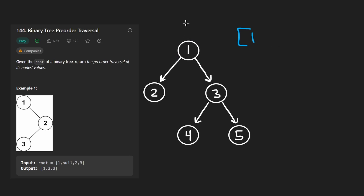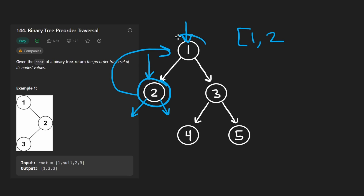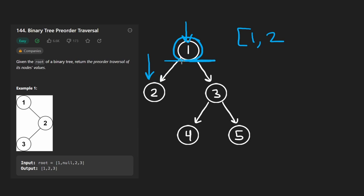So our output would look like this. We visited the root, then we'd go left and visit node two, adding two to the output array. We'd try to go left at that point, but we can't — there's nothing there. Then we'd pop back up to the parent node and try to go right. Again, we can't — there's nothing there. So then we'd pop back up to this parent node, and from here we're basically done running pre-order traversal on that subtree. We pop back up to the root, and from here we know we're done with the left side of the tree, and since it's pre-order, we've already done the root node.